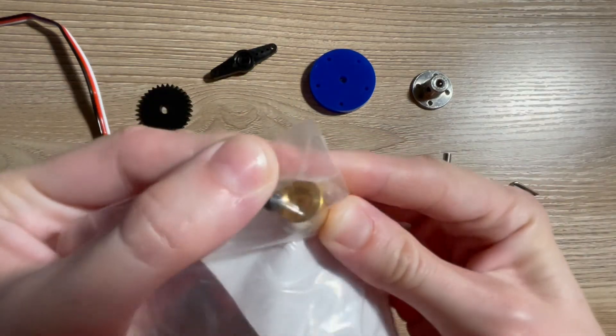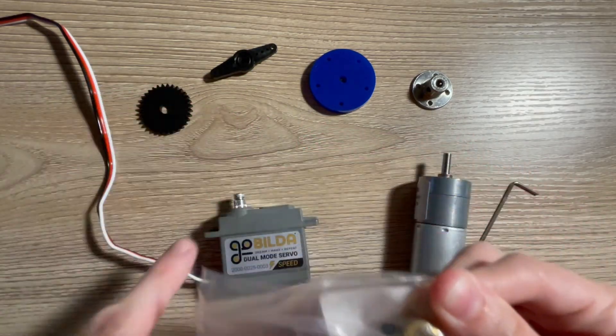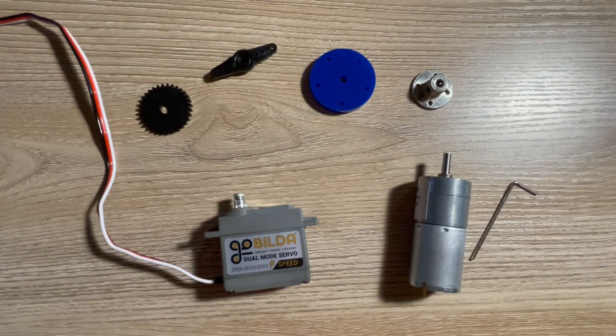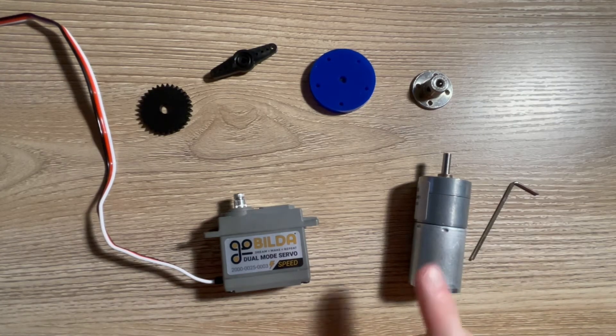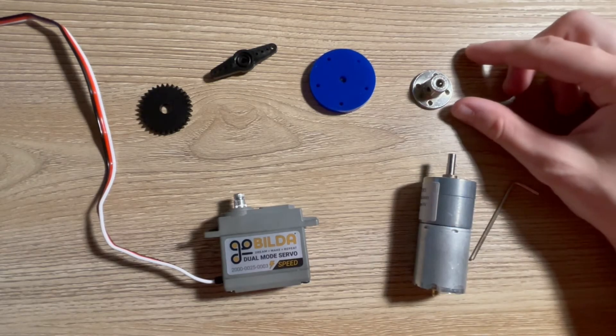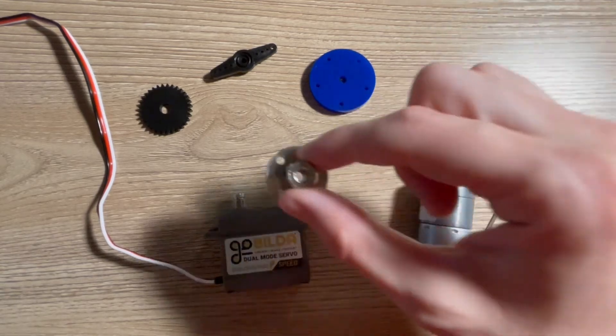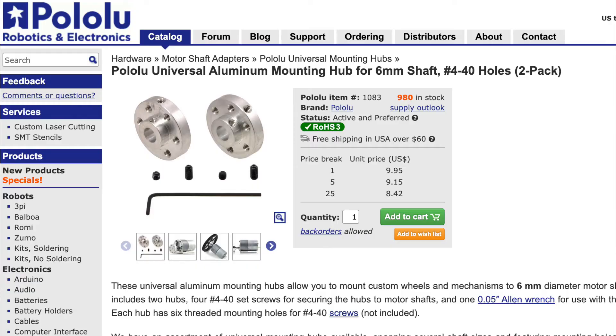As you can see, there are teeth here that attach to the teeth of this motor. For the type of motor with a shaft that doesn't have splines, you can use a universal mounting hub for your shaft. These come in a variety of different sizes, but all of them usually come with a set screw.